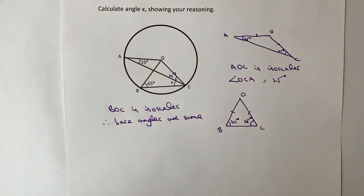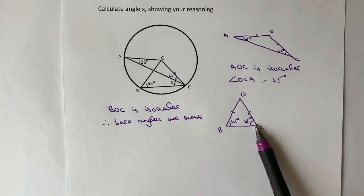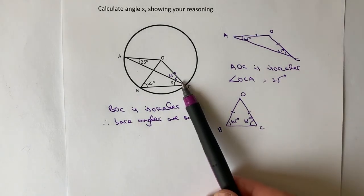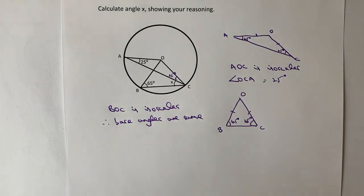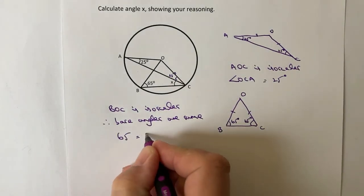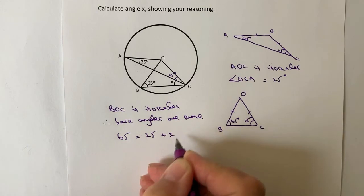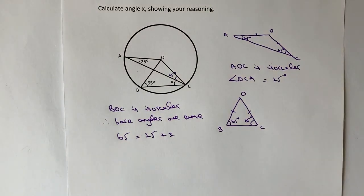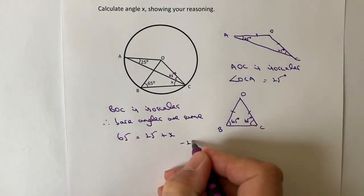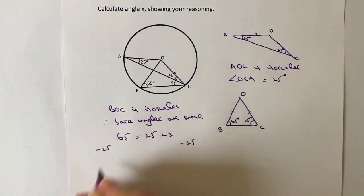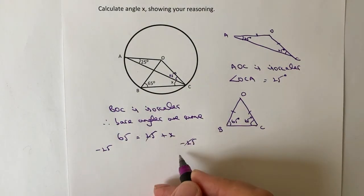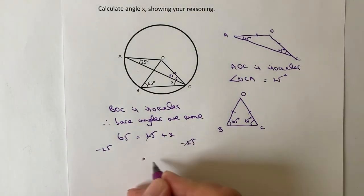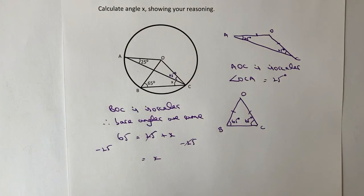So in other words, the way that we're going to calculate that is we're going to say that if this angle here is 65, which is made up of these two parts, then we can say that 65 equals 25 plus X. So therefore, if we want to find the value of X, what I'm going to do is minus 25 from both sides. Remember your algebra here. So 25 minus 25 disappears and I just get X, and 65 minus 25 is 40.